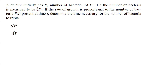Let us find the model for this question. We know that the rate of change of population with respect to time, dp/dt, is proportional to the population itself, so that's how you end up with k times p. k is the constant of proportionality and p is the population.